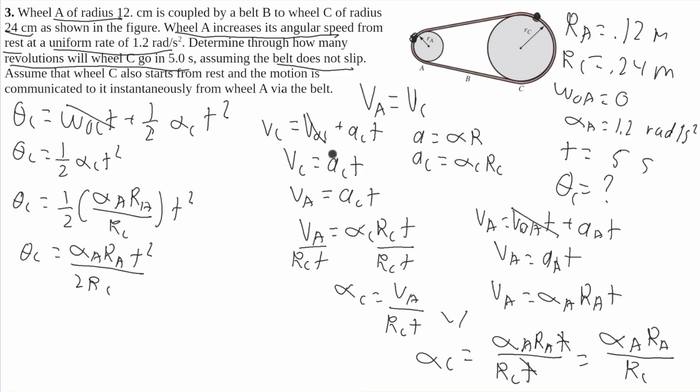Now I'm actually going to plug in these numbers here because we're going to have to do a conversion at the end. So we'll get theta C equals 1.2 times R A is 0.12 times time is 5 seconds squared, over 2 times R C is 0.24, and we'll get this equals 7.5 radians.